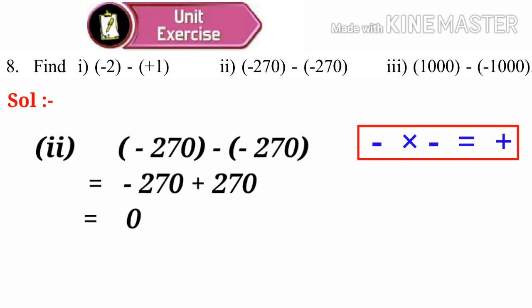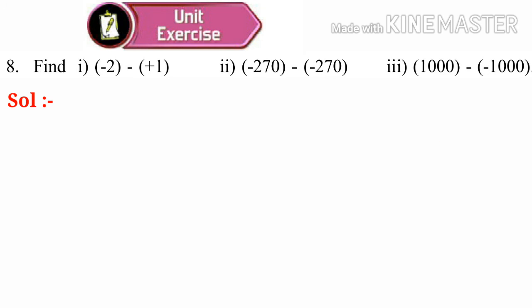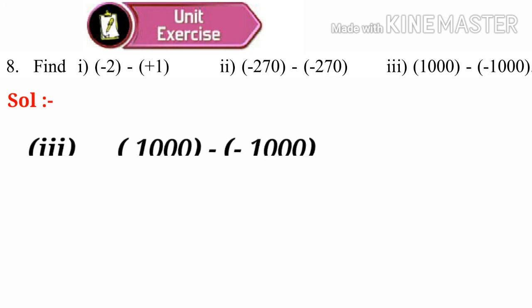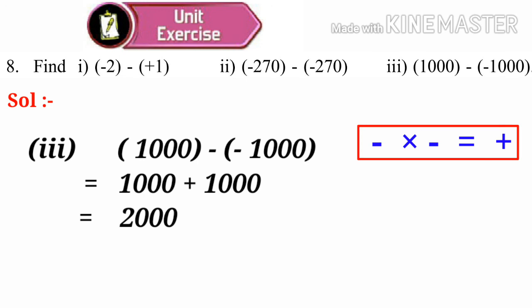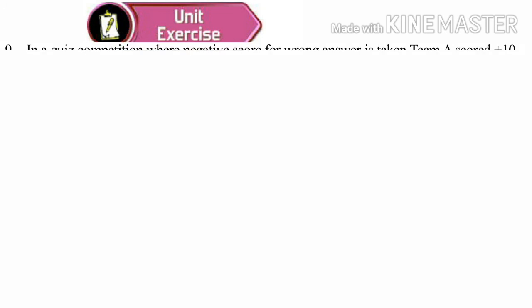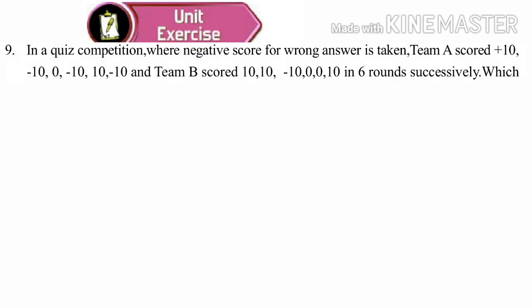Now, 8th problem. Solution: minus (minus 1000) — minus into minus is plus, so plus 1000 plus 1000, that is 2000.